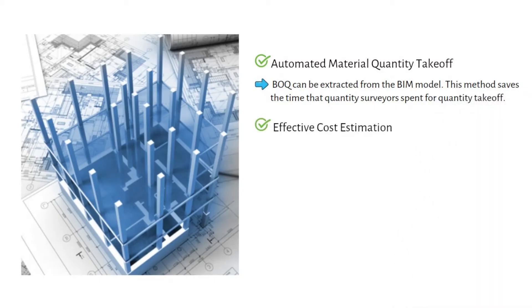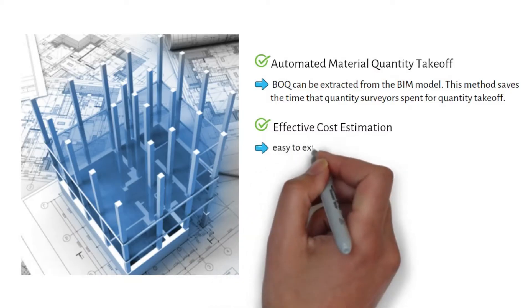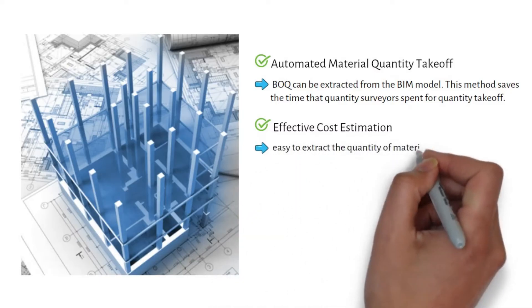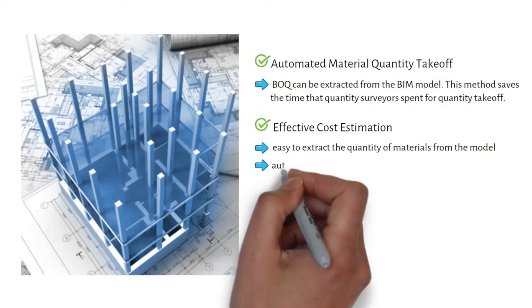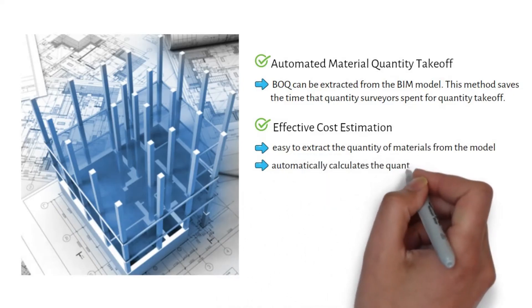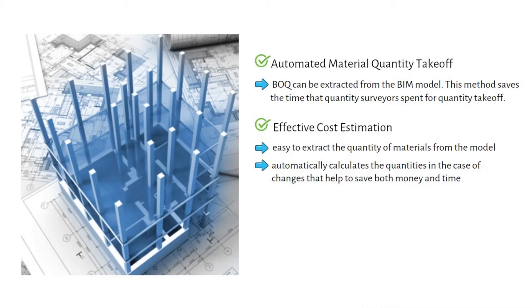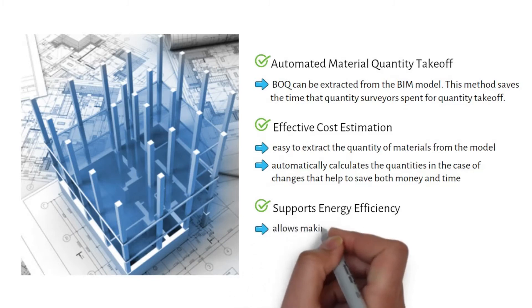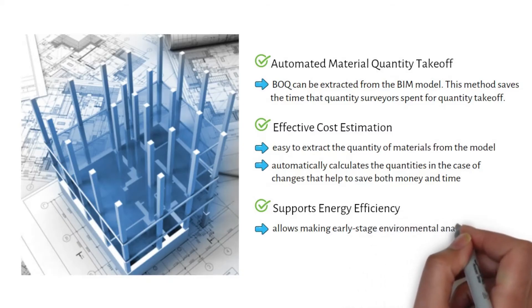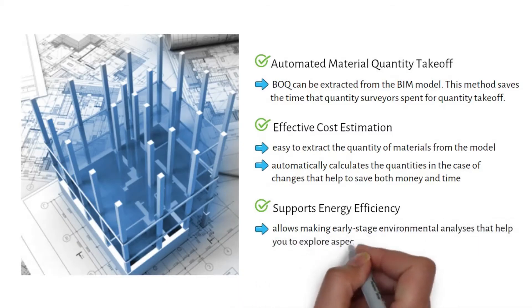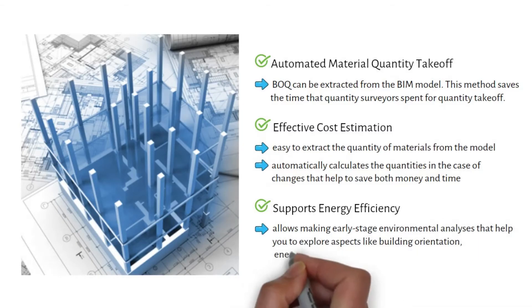Effective Cost Estimation: With the cost estimating feature of BIM, it is easy to extract the quantity of materials from the model. The model automatically recalculates quantities in the case of changes, helping to save both money and time. Supports Energy Efficiency: Traditional design and construction processes do not provide adequate environmental analyses. BIM allows making early-stage environmental analyses that help explore aspects like building orientation, energy use, and daylight.